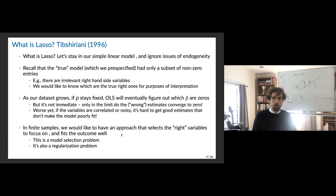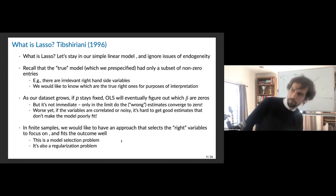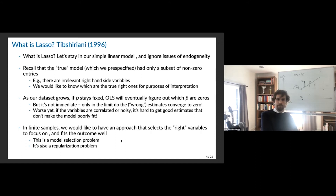Worse yet, if the variables are correlated or noisy, if you start putting everything on the right-hand side, you're going to basically have a really poorly fit model. Parsimony is really valuable for running OLS — the more things you put on the right-hand side, it can really create issues, especially when things are collinear. So in finite samples, what we love — and this is a problem people worked on for a while — is something that selects the right variables and fits the outcome well. It's both a model selection problem and a regularization problem: how do I make the model fit better by controlling the noisiness of the coefficients?